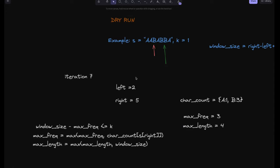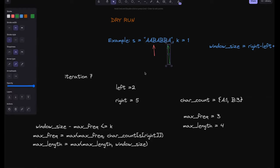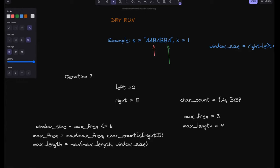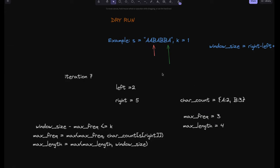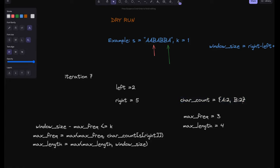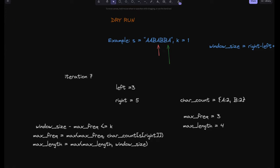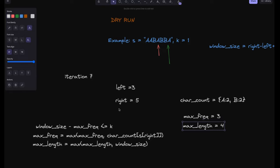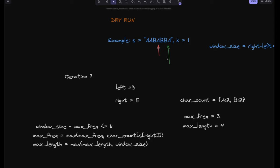In iteration 7, right is at index 6, pointing to A. A's count becomes 2 in the current window. Max frequency is still 3. Window size is 6 - 3 + 1 = 4. Wait, 5 - 3 = 2, which is greater than k, so we need to shrink again. We reduce B's count and move left to 3. Max length remains 4. In iteration 8, the right pointer goes beyond the length of the string, so we exit the loop and return the length of the longest substring with at most 1 replacement, which is 4.